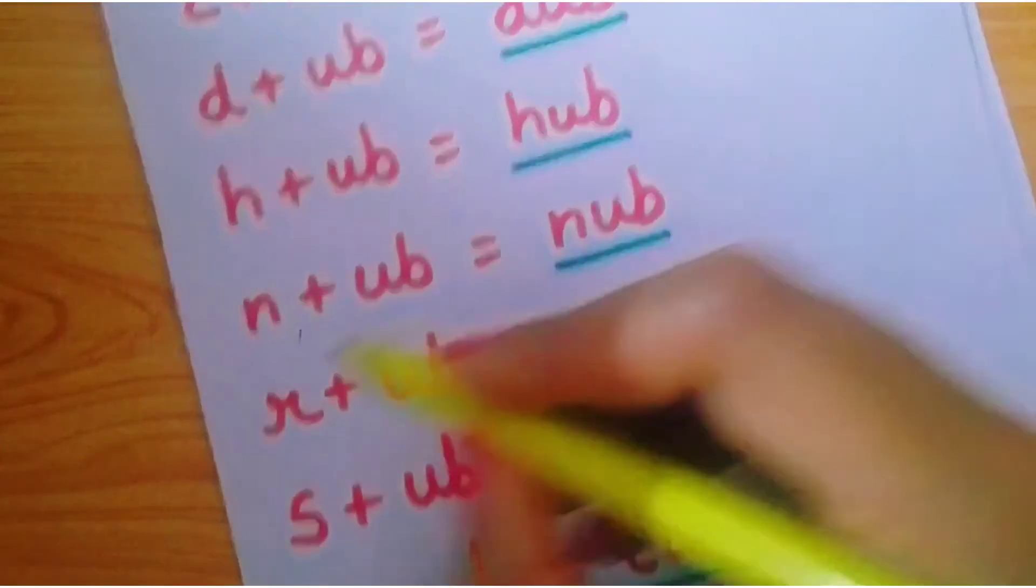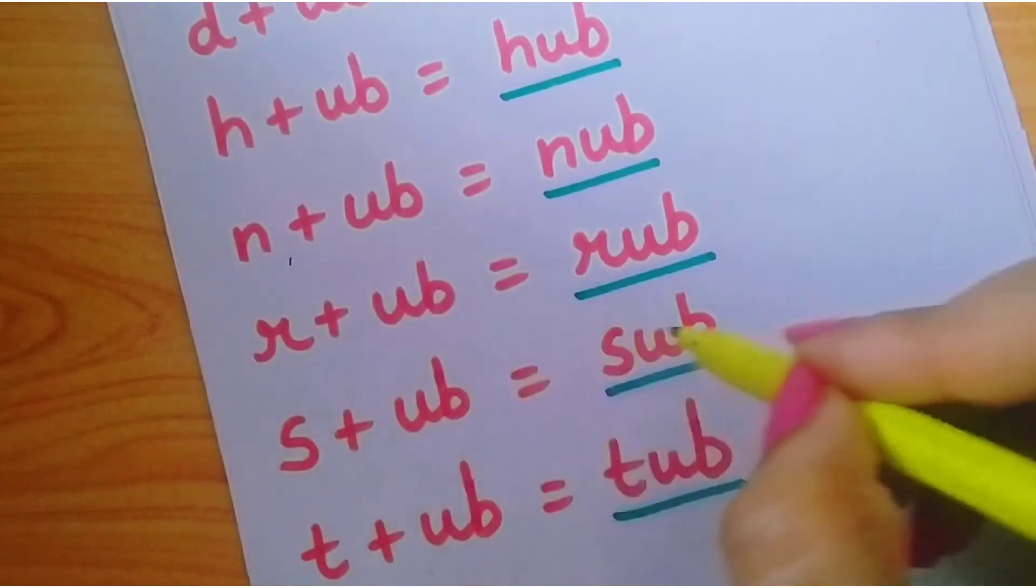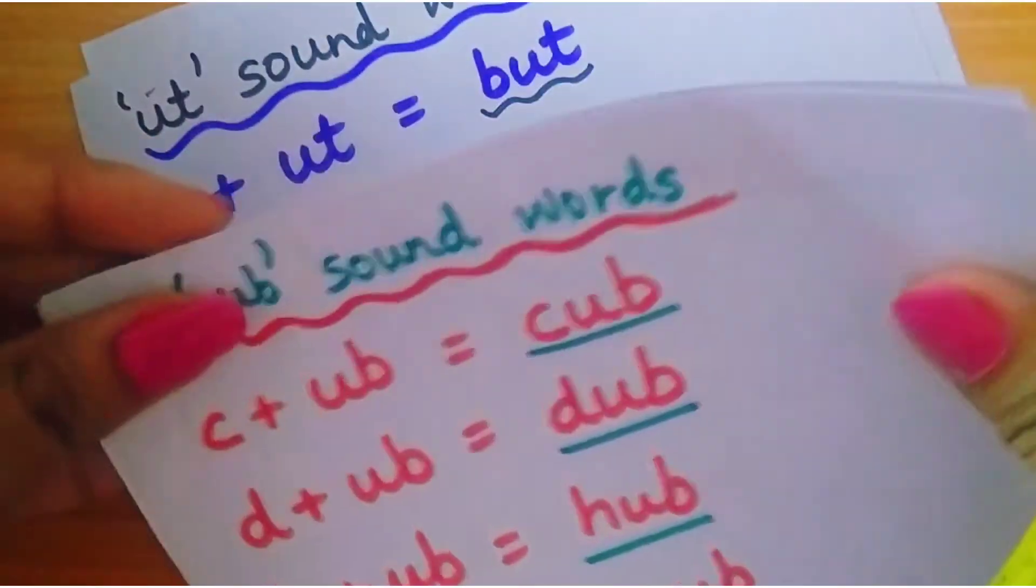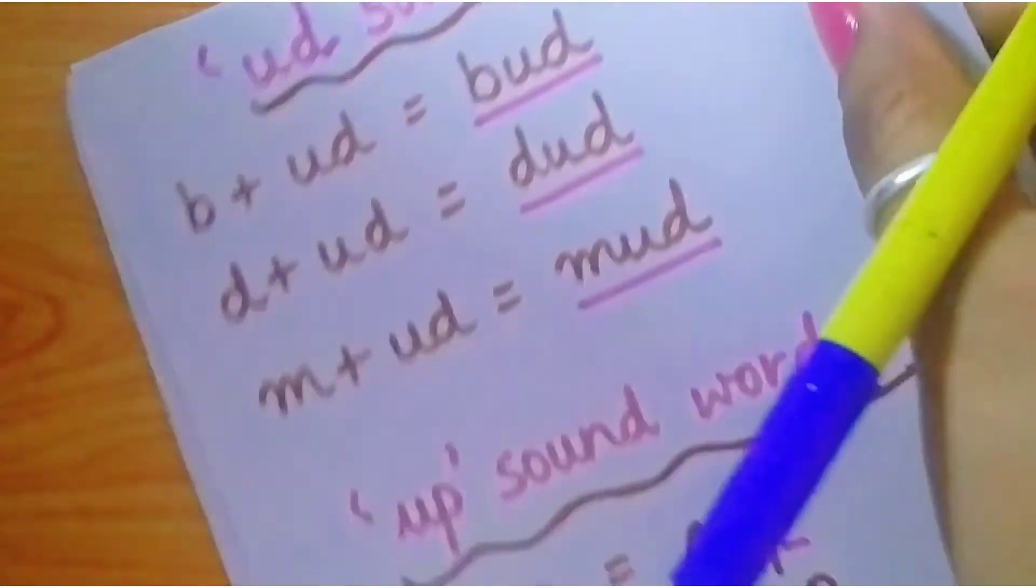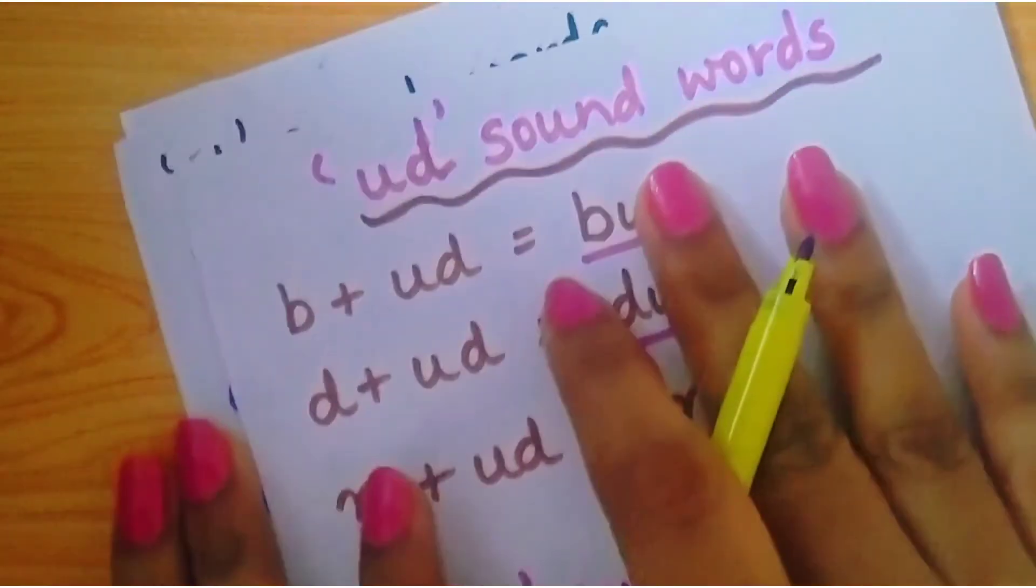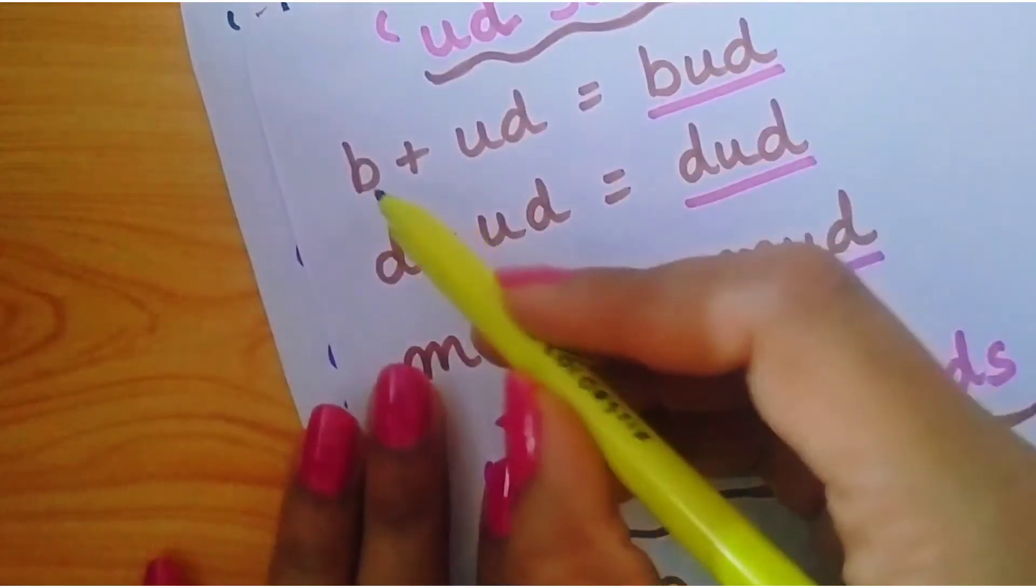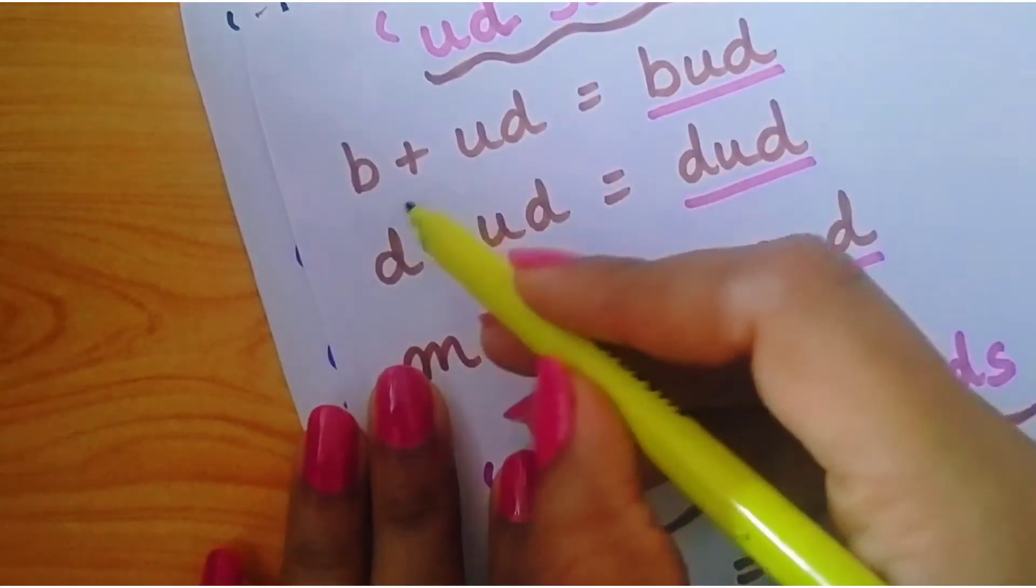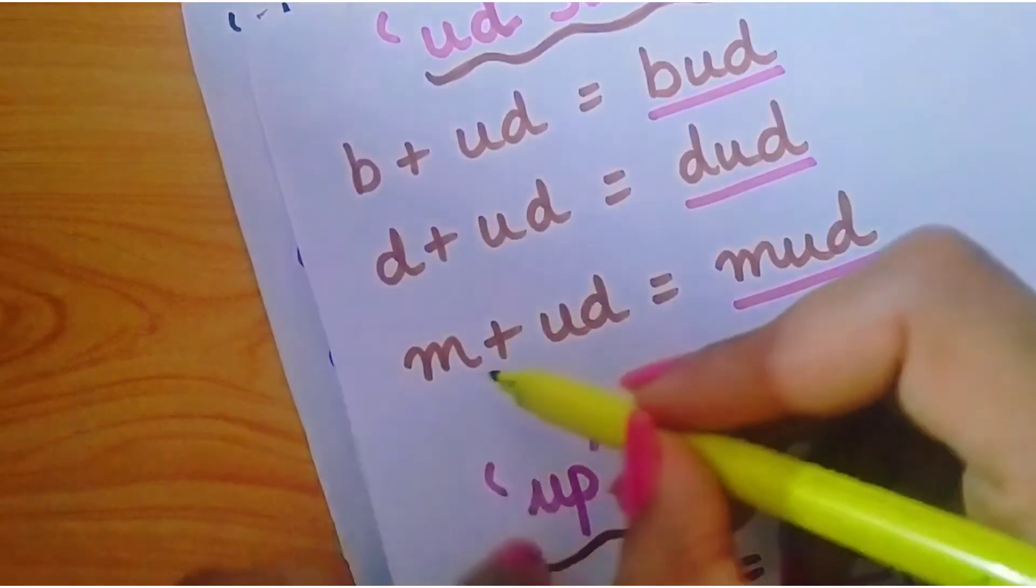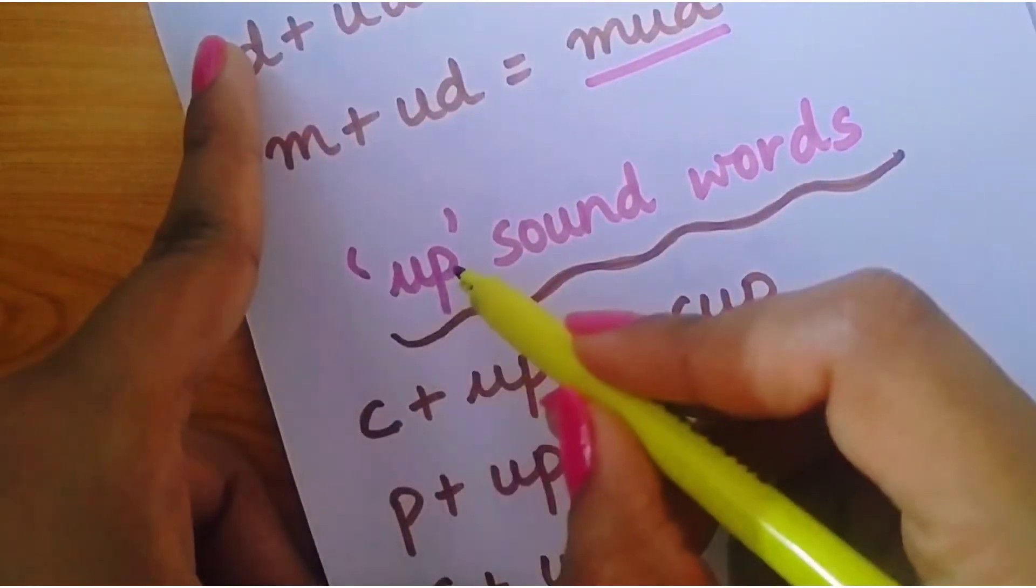n-ub-nub, r-ub-rub, s-ub-sub, t-ub-tub. Let's see the next sound ut sound words. See ut sound words. b-ut-but, d-ut-dut, m-ut-mut. up sound words c-up-cup, p-up-pup, s-up-sup, y-up-yup.